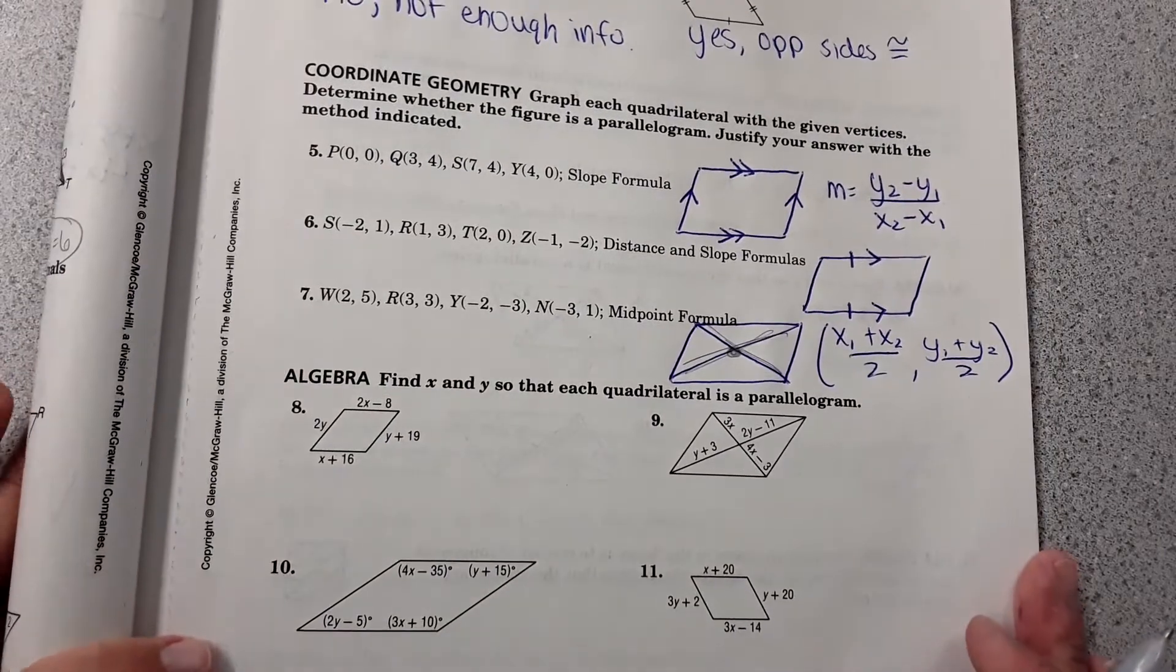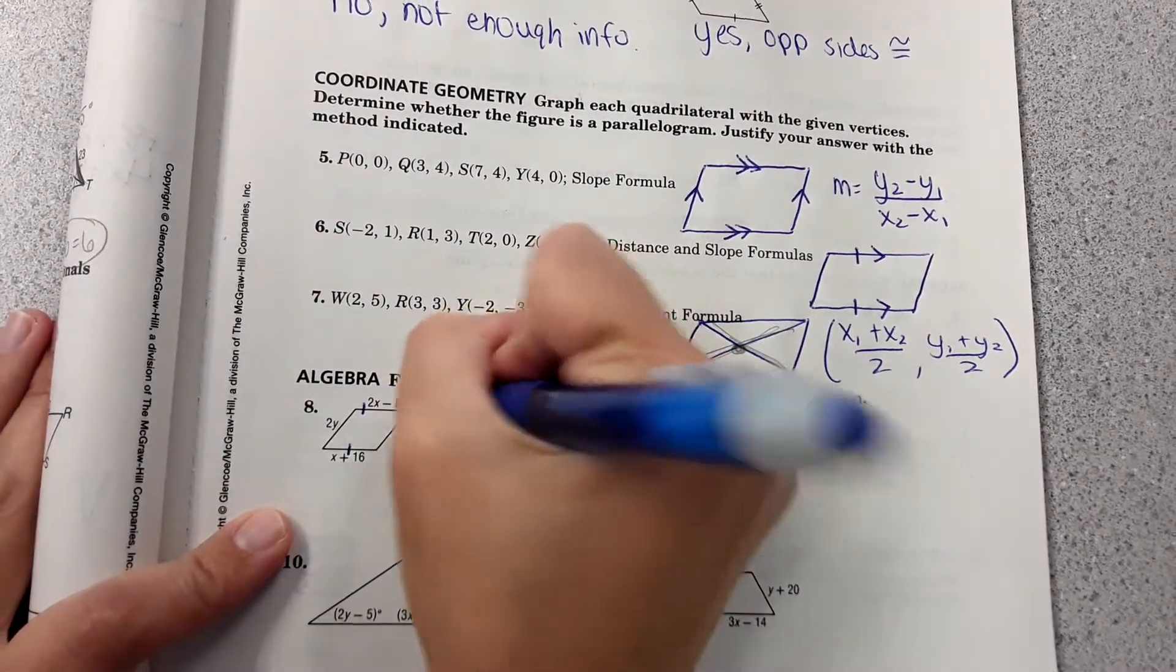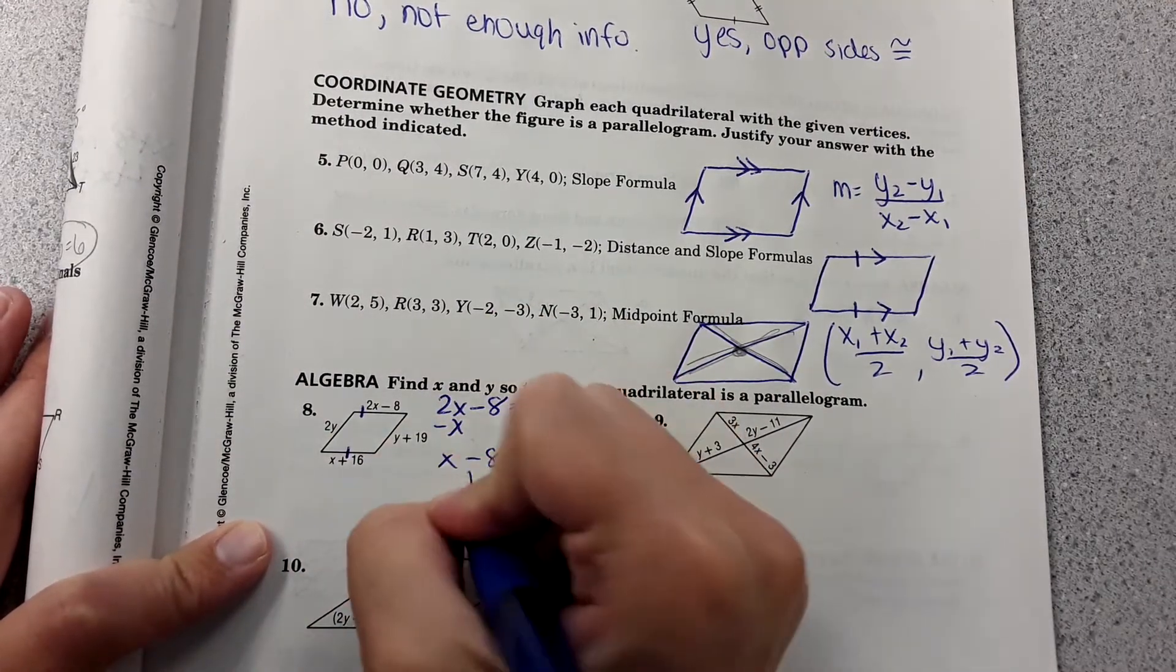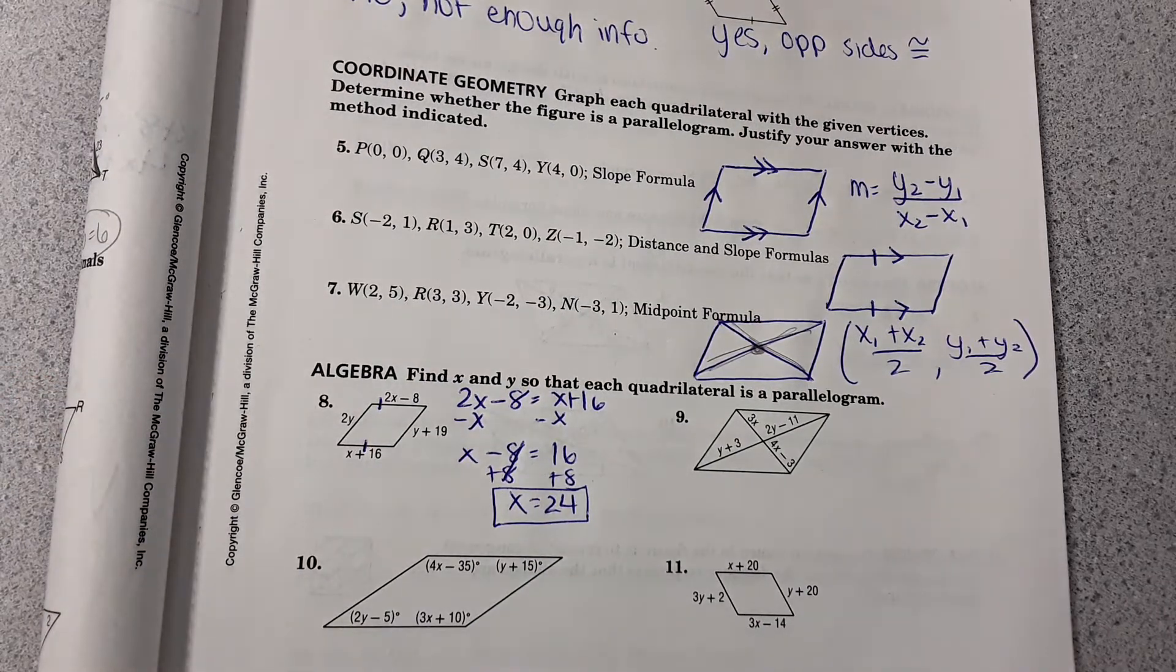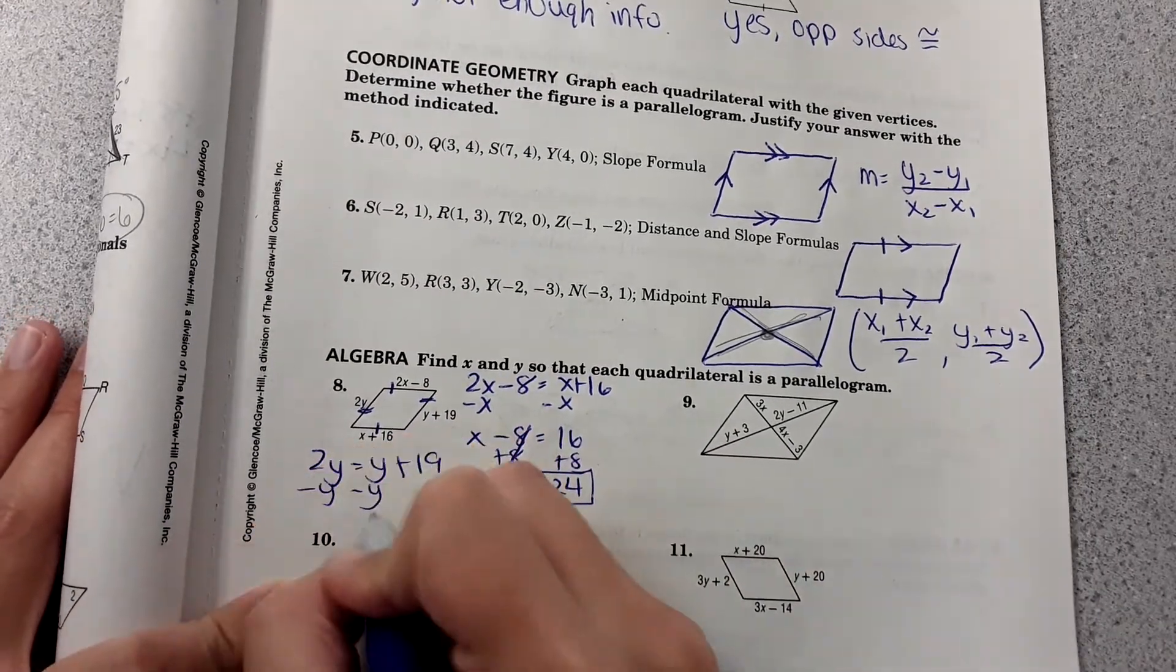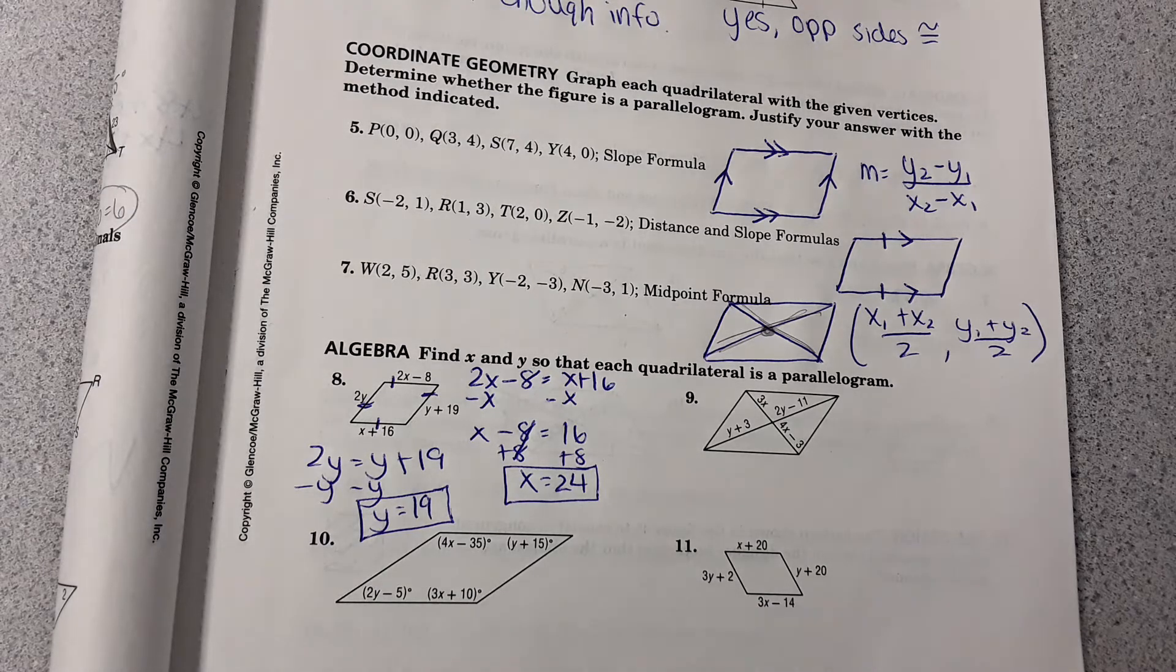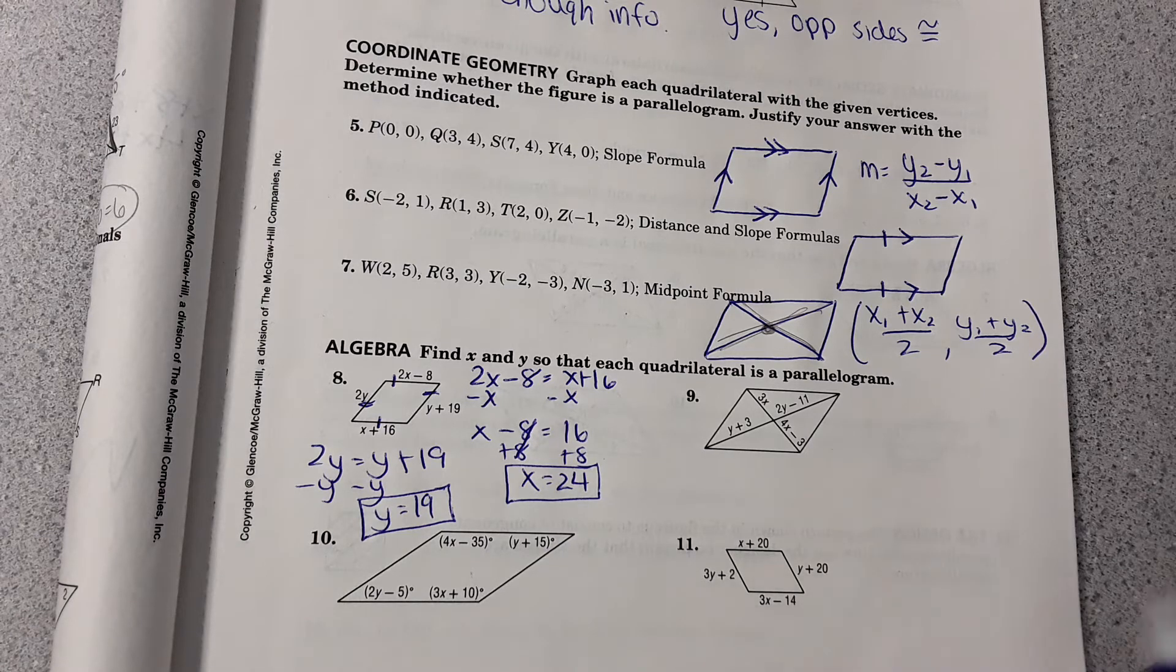Then, 8, 9, 10, and 11 are just like you saw yesterday. Opposite sides of a parallelogram are congruent, so you can set the expressions equal. I might start with just the x's: 2x minus 8 equals x plus 16 and solve for x. And then this side is congruent to this one, so you can set 2y equal to y plus 19 and solve that way. And 9, 10, and 11 are just like you saw yesterday where you set the equal parts equal. Do you need me to walk you through more of that, or you got it? The algebra is good?